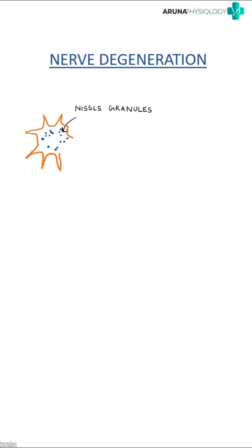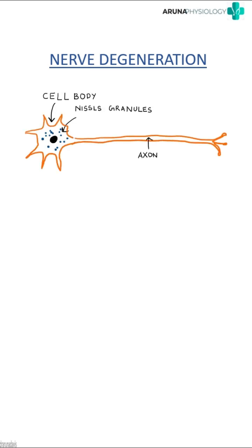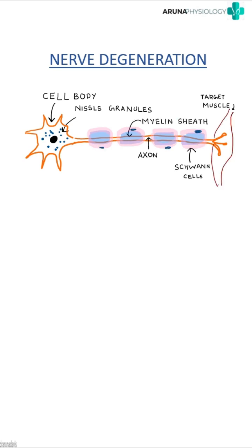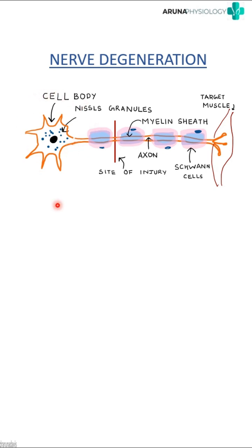The normal structure of a neuron consists of a cell body and axon, which is surrounded by myelin sheath and Schwann cells, thereby conducting the impulse to the target muscle. So what happens if there is an injury in between? The conduction will be hampered. So what are the changes that occur when there is an injury?